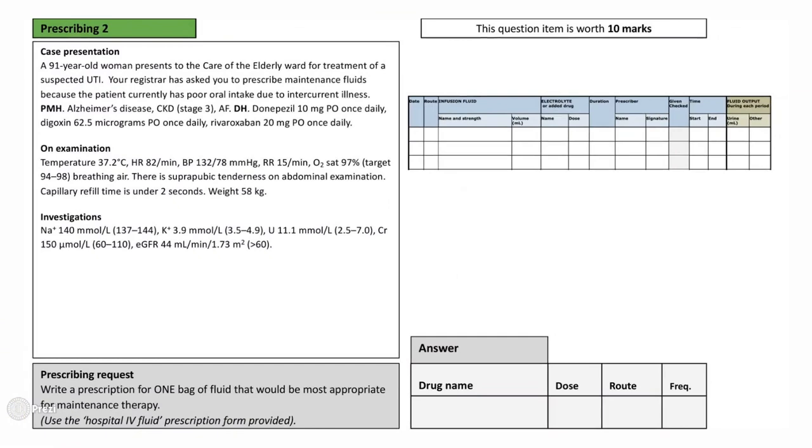Investigations found her to have a normal sodium and potassium, but she has a raised creatinine and urea and a reduced eGFR. If we now look at the prescribing request, it is asking you to write a prescription for one bag of fluid that would be most appropriate for this lady's maintenance therapy. So it's now time again to pause here and consider your answer. Now that you have considered your answer, let's go through the question. This question tests your knowledge on the prescription of maintenance fluids, particularly in the presence of renal impairment. If we look at the clinical presentation, the key aspects to pick up on are that this patient is 91 years old, has renal impairment, and has poor oral intake. There are no signs that she's experiencing hypovolemia or electrolyte imbalances, and we are told that she weighs 58 kilograms. This patient is unable to hydrate herself, and therefore she will need short-term maintenance of water, electrolytes, and nutrition.